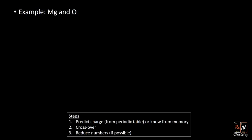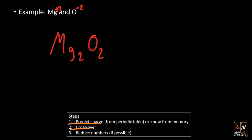Next example: magnesium and oxygen. Magnesium is +2 from its position on the periodic table, and oxygen is -2. We cross over and get Mg2O2. Now we can reduce — if both elements have the same charge, we only need one of each to make it balance out.